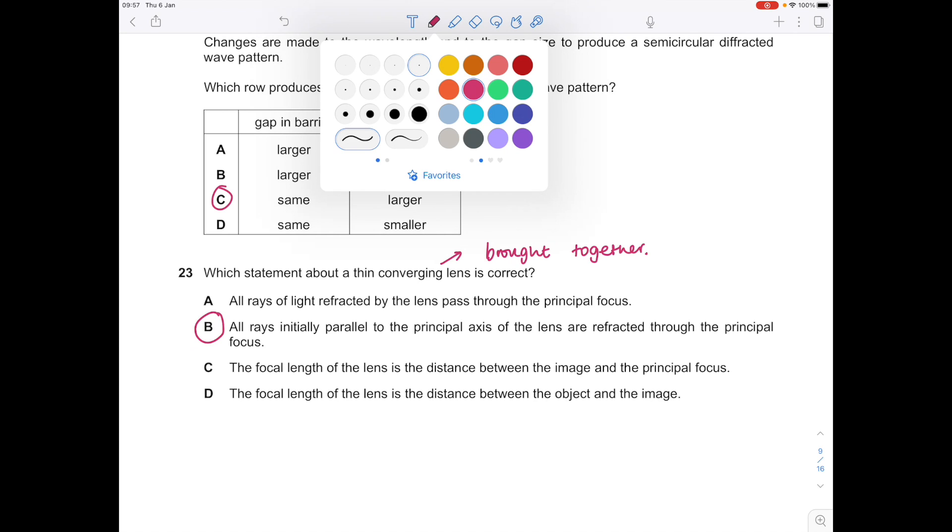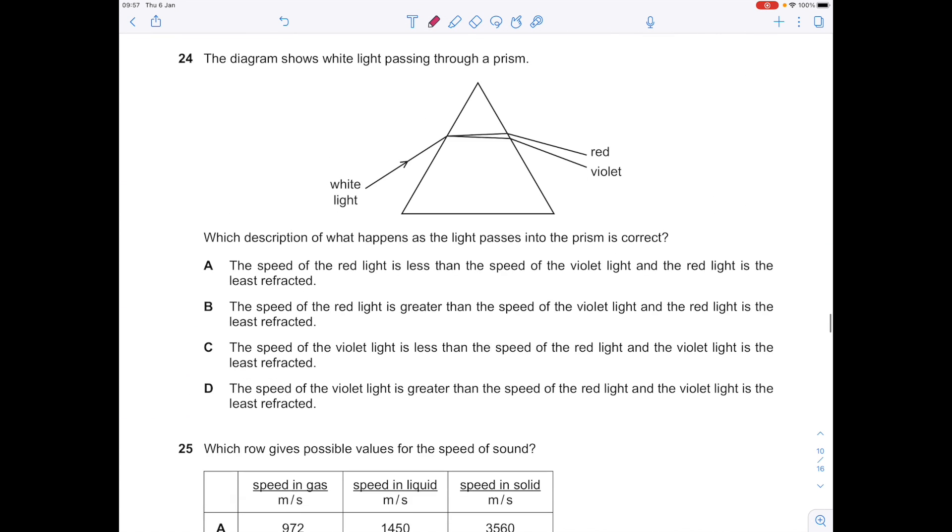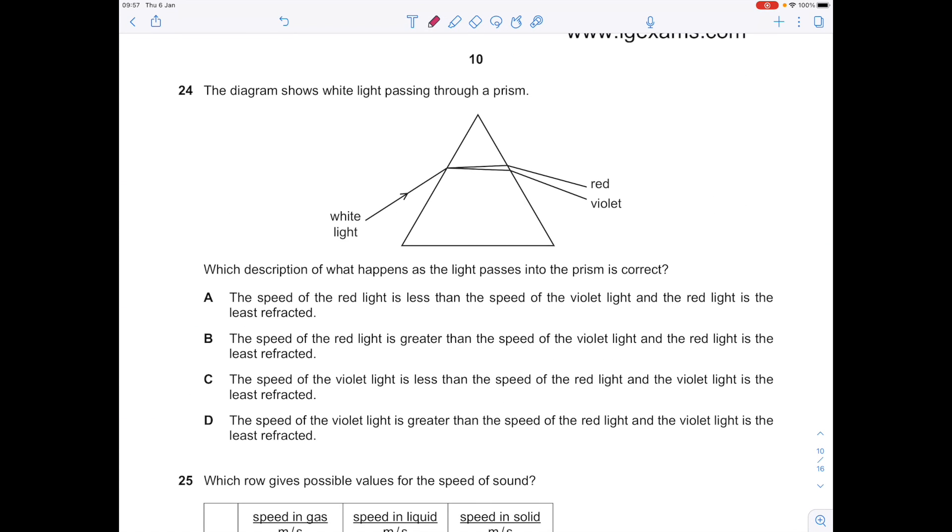So if we look at our options, we can see that B shows this: all rays initially parallel to the principal axis of the lens are refracted through the principal focus.